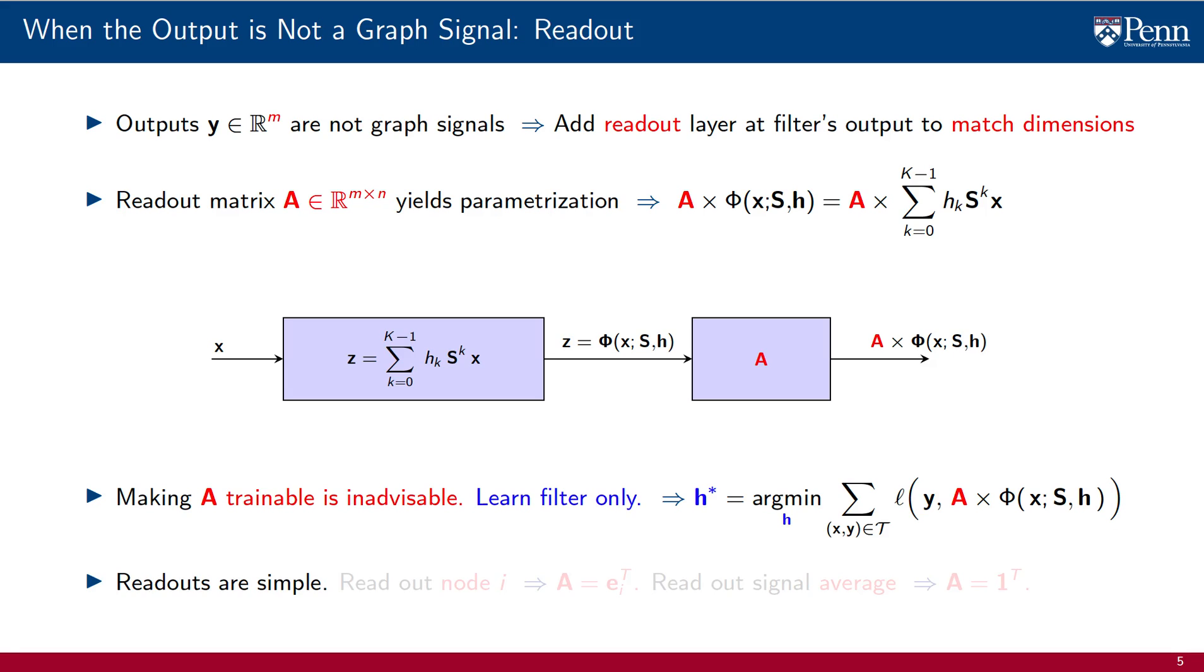The motivation for simply choosing A is that we want to retain the advantages of using a parameterization that leverages the graph. And we can't get away with using simple readouts because most situations with dimensions mismatch require simple readouts. For instance, if we want to read out the signal value at node i, we choose the i-th vector of the canonical basis. This is useful for example in recommendation systems or in any problem in which we are interested in values of individual nodes. If we want to classify a signal, a convenient way to do that is to read an average. We can read this out with the all-one vector.